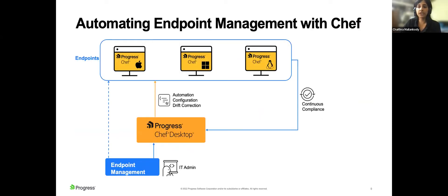This is what the Chef setup looks like for automating endpoint management. Core tasks like zero-touch enrollment, remote wipe or lock, are performed with endpoint management tools. These tools are also used for deploying Chef Client onto the endpoints. Once the endpoint management tool installs Chef Client, Chef takes over — ensuring all configurations are applied correctly and devices are in the desired state. With Chef, you achieve not only automation but also continuous compliance with a single toolchain and process.